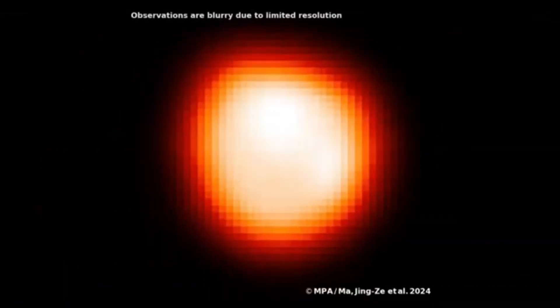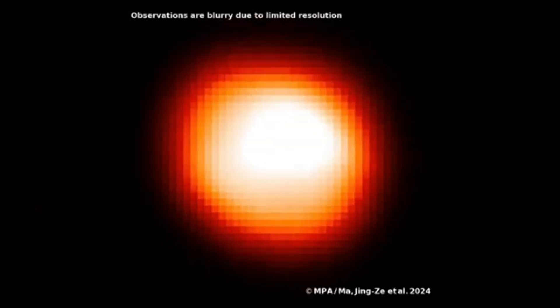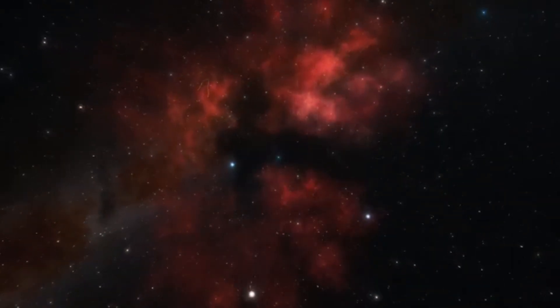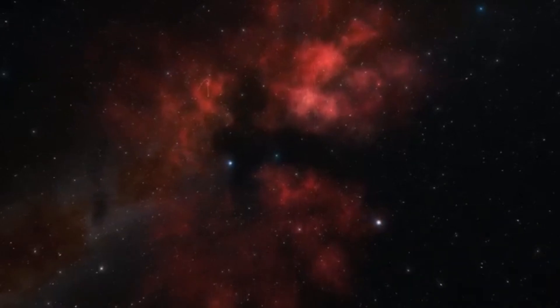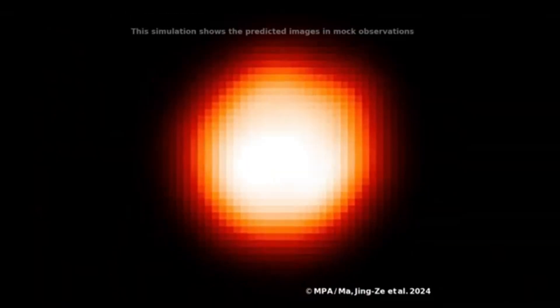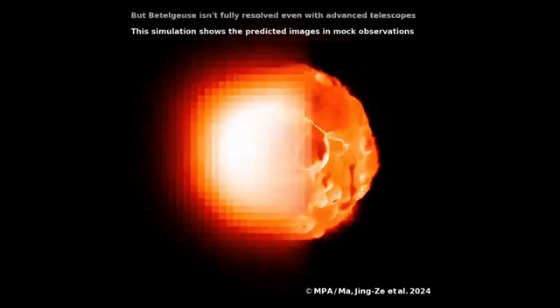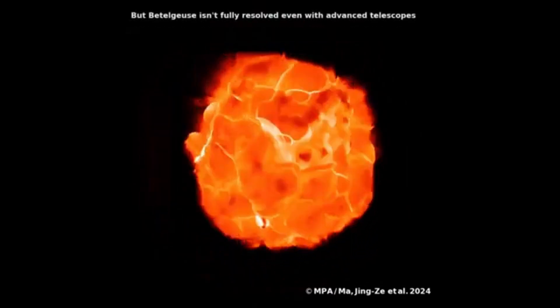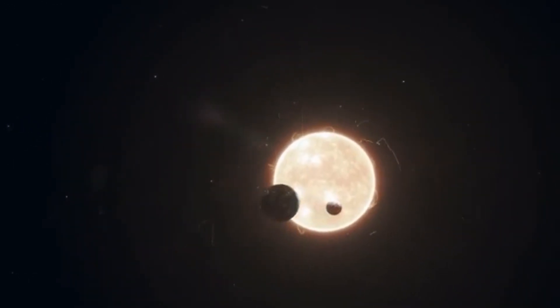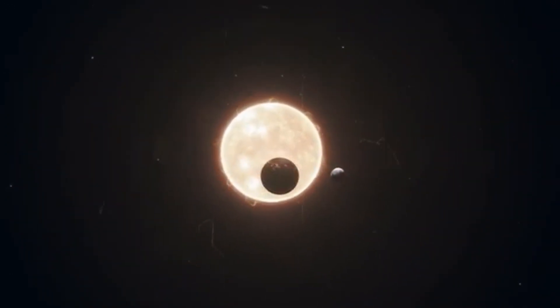This means it exists within Betelgeuse's extended atmosphere. Interestingly, the team believes that this star hasn't yet begun burning hydrogen in its core, the hallmark of a star's main sequence phase. Consequently, the Betelgeuse system now contains two stars at opposite ends of their life cycles. Although they formed around the same time, the smaller star's delayed ignition doesn't guarantee it a long life.